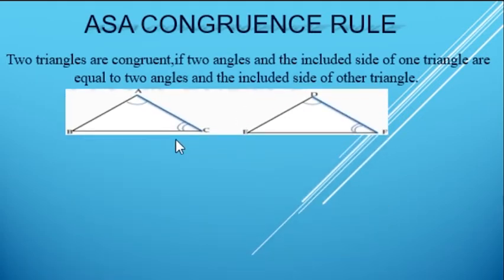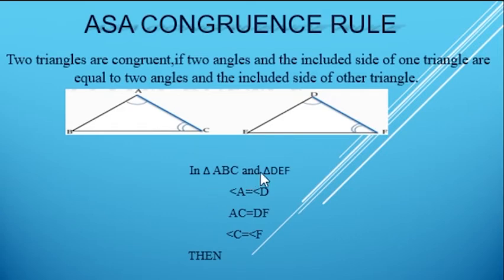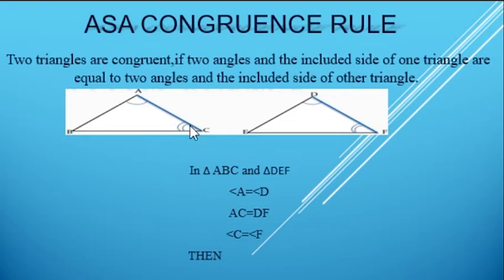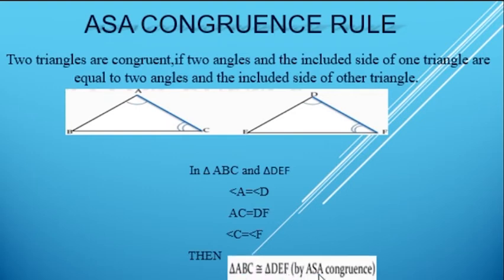The 2 figures are ABC and DEF. In this figure, we have given that angle A equals to angle D, and AC equals to DF, and angle C equals to angle F. Here it is clear that 2 angles include 1 side. Then we can say the 2 triangles are congruent by Angle Side Angle congruence rule.